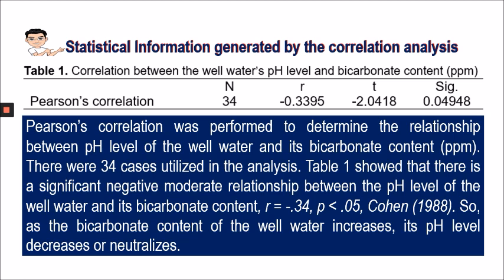There were 34 cases utilized in the analysis. Table 1 showed that there is a significant negative moderate relationship between the pH level of the well water and its bicarbonate content. So as the bicarbonate content of the well water increases, its pH level decreases or neutralizes.